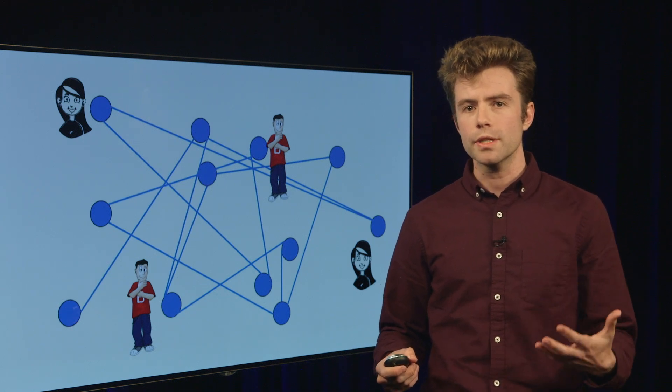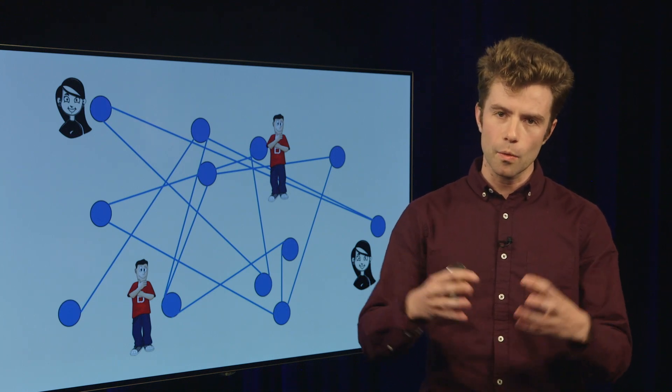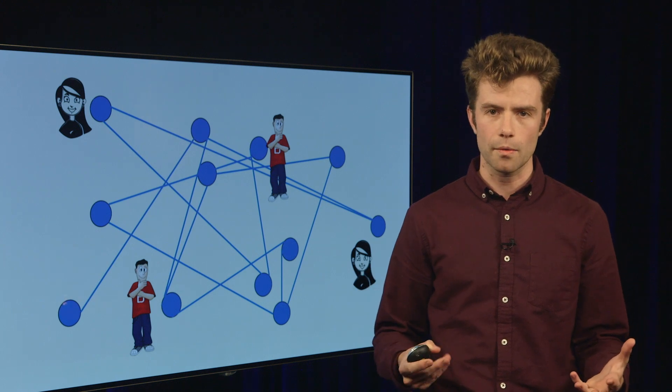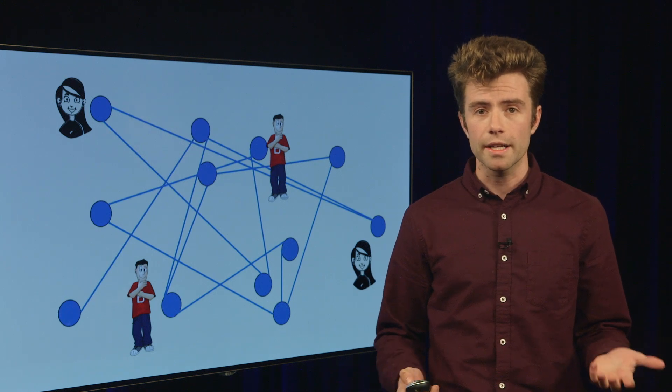One kind of structure you might be interested in is a community, or a group of individuals that is better connected to one another than they are to the rest of the network. Now, given such a data set, how would you go about finding a community?